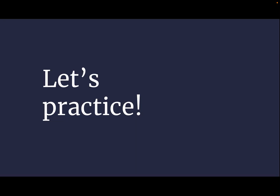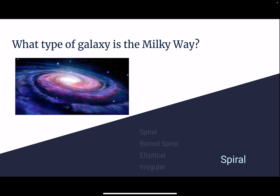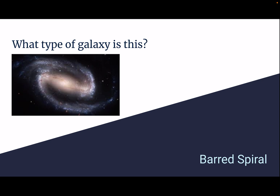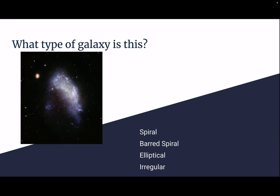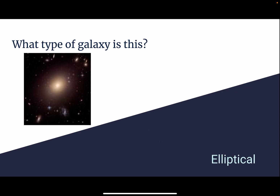Let's practice. What type of galaxy is the Milky Way? Our galaxy is a spiral galaxy. What type of galaxy is this? This is a barred spiral galaxy. What type of galaxy is this? This is an irregular galaxy. What type of galaxy is this? This is an elliptical galaxy.